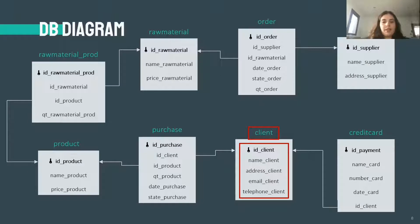In bold are represented the primary keys. These correspond to the attributes that uniquely identify each tuple of a table. A foreign key is a set of one or more columns in a table that refers to the primary key in another table. For example, ID client is a foreign key in the table credit card.